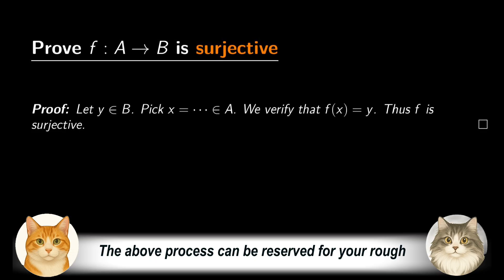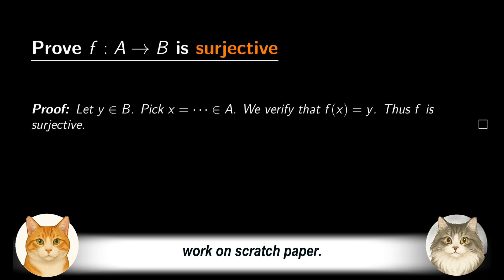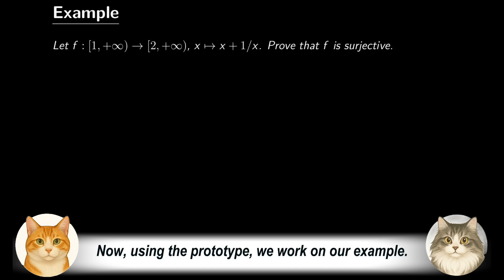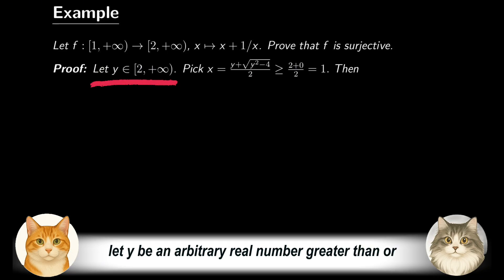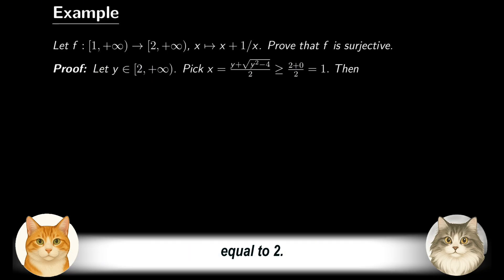The above process can be reserved for your rough work on scratch paper. In your written proof, you may directly state the value of x you have chosen for a given y. Now, using the prototype, we work on our example. To show the function is surjective, let y be an arbitrary real number greater than or equal to 2.